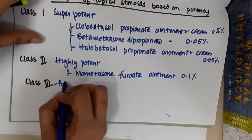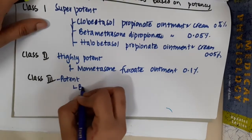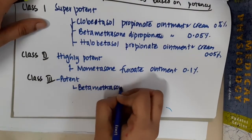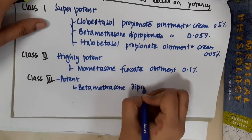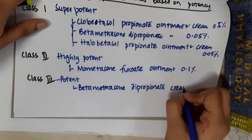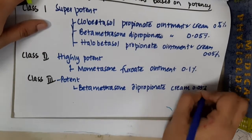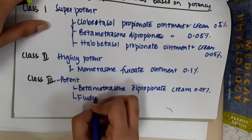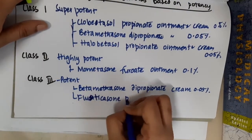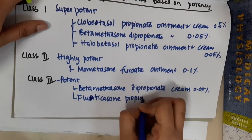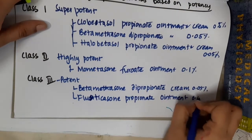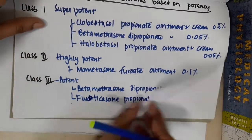Class 3 includes betamethasone dipropionate ointment at 0.05% and fluticasone propionate ointment at around 0.05%.